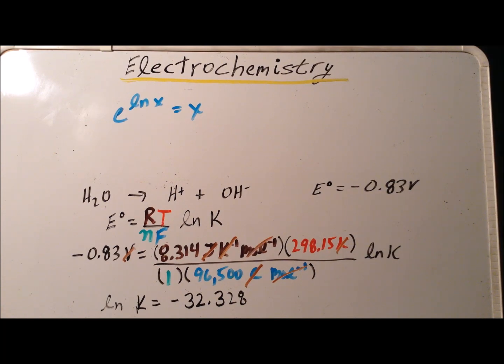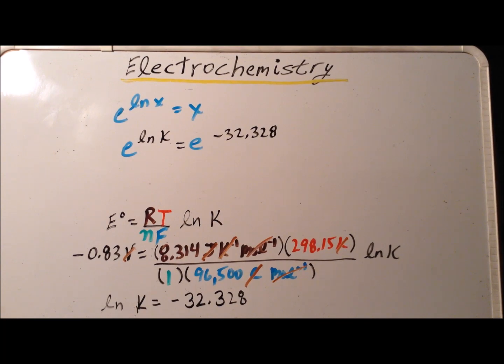Next, we use an important property of the logarithm. If I have e to the natural log of x, it's simply going to be x. So it allows me a method to solve for the natural log of k equal to some value. I'm going to raise the left hand side and the right hand side as powers of e. So this gives me specifically that e to the natural log of k is equal to e to the minus 32.328. But the left hand side, e to the natural log of k, is simply going to be k.